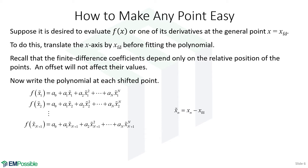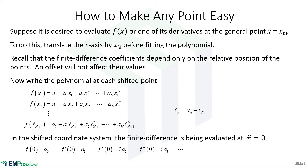We shift so that we center our points around zero — zero is where we want to evaluate the derivative. Given that, if we want to interpolate the function at x_fd (or zero in the translated system), that's just polynomial coefficient a_0. If we want the first-order derivative, that's polynomial coefficient a_1. The second-order derivative is polynomial coefficient a_2 times 2. The third-order derivative is polynomial coefficient a_3 times 6, and so on.